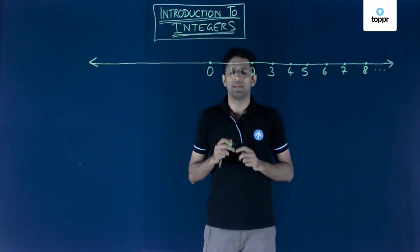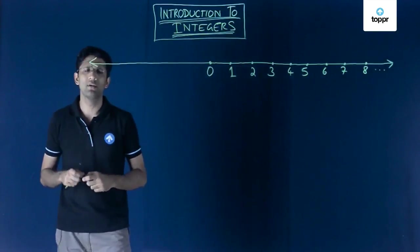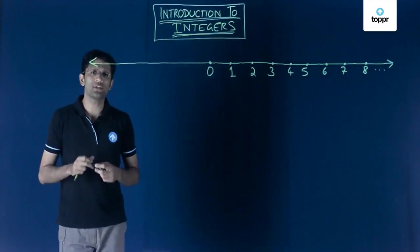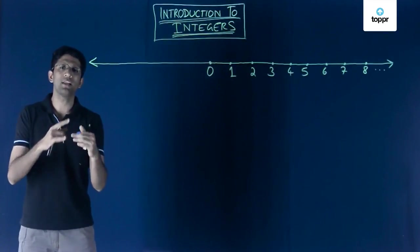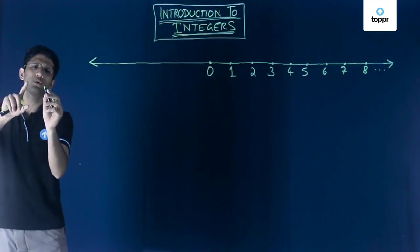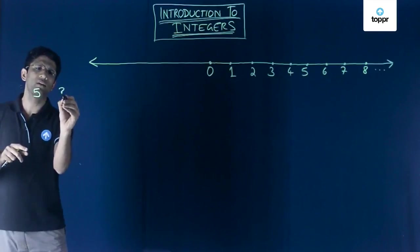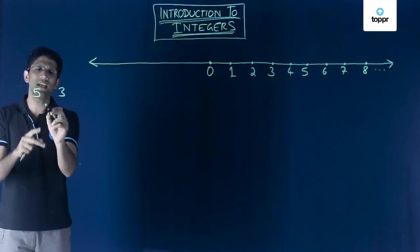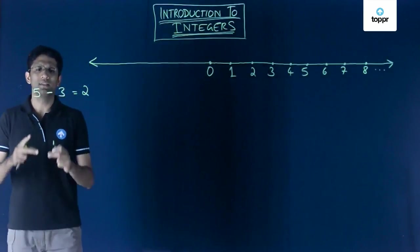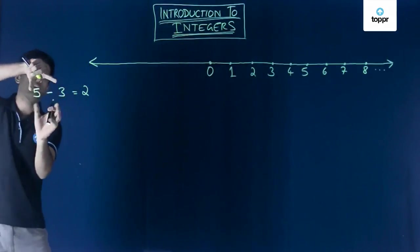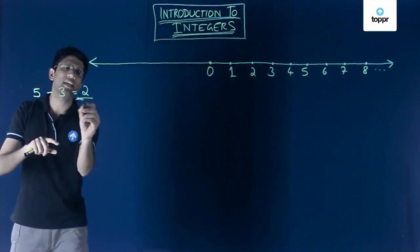We have also seen operations on natural numbers and whole numbers — operations such as addition, subtraction, multiplication, and division. Now we will look at subtraction in greater detail. We know that when we take two numbers, say 5 and 3, and we subtract 3 from 5, the answer we get is 2. This is fine because we are subtracting one whole number from another and the answer is again a whole number.